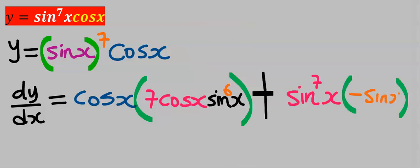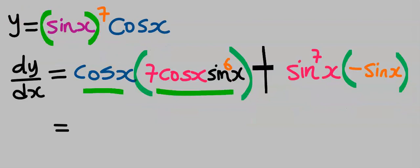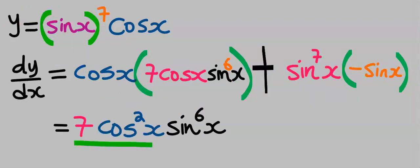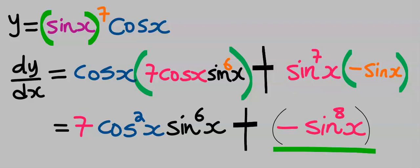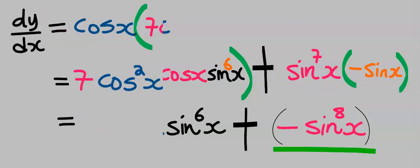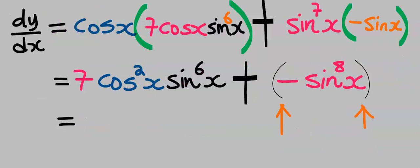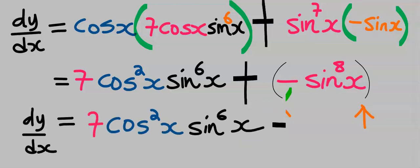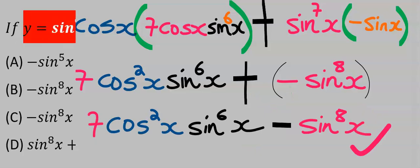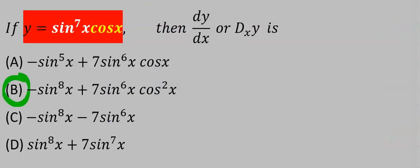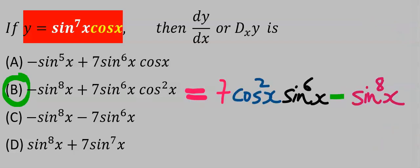Next this will multiply this and we have seven cos squared x sine six x. Next sine seven x will multiply minus sine x. Next you remove the bracket and plus multiply by minus gives you a minus and this becomes our dy/dx. From the options our answer is B. Anyway you rearrange it the answer still remains the same. If you decide to simplify it further by factorization you can still get this. Our final answer is B.